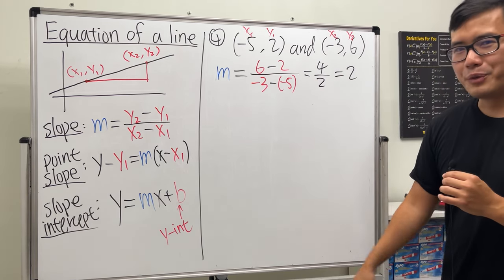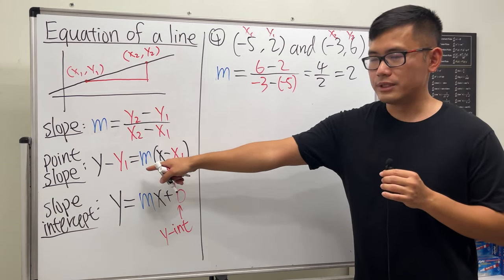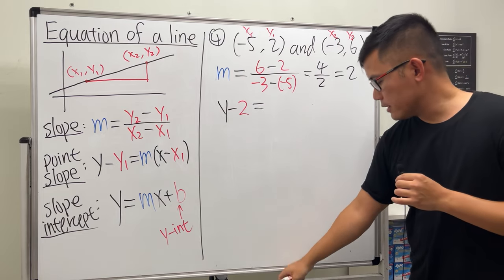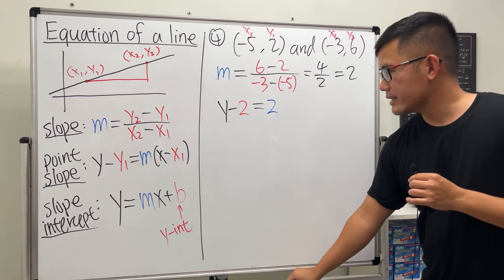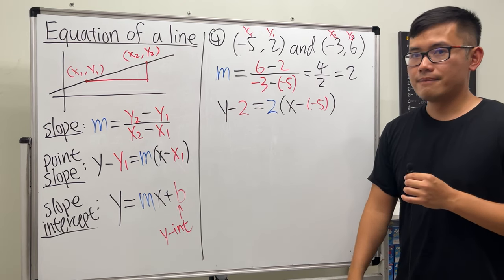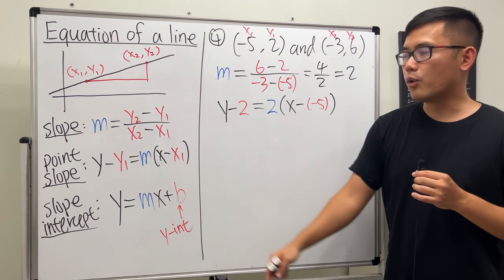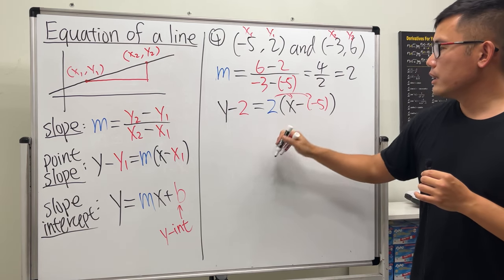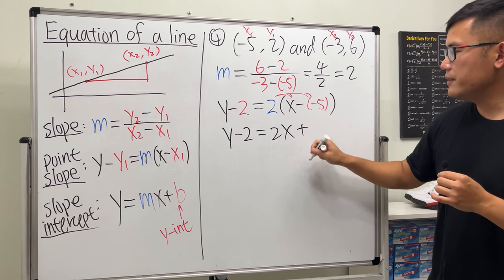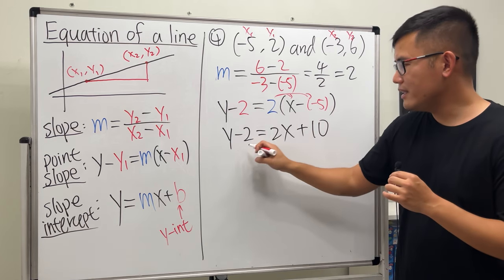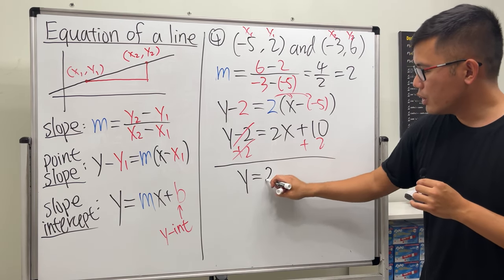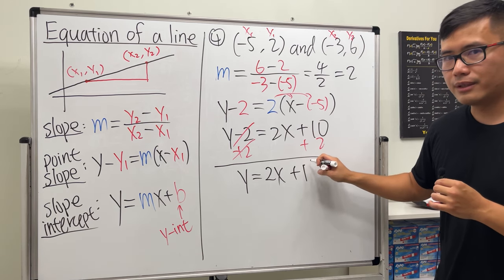The slope is 2. Use point-slope form: y − 2 = 2(x − (−5)). Distribute: y − 2 = 2x + 10, since negative times negative is positive and 2 × 5 = 10.